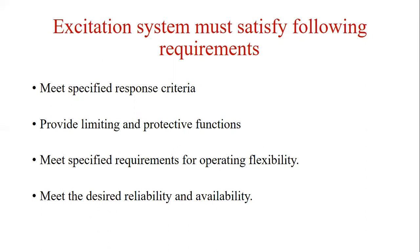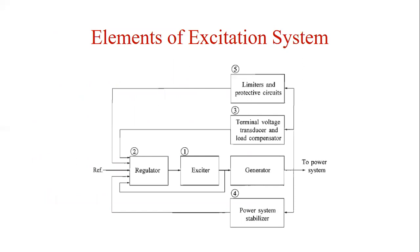These are the requirements of the excitation system from the generator point of view as well as the power system point of view. The excitation system plays a vital role in power generation. Now let's move further to the elements of an excitation system. This is the block diagram which shows a synchronous generator excitation control system, in which we have the exciter, the regulator, the terminal voltage transducer and load compensator, power system stabilizers, and limiters and protective circuits. Let's see the functions and details one by one.